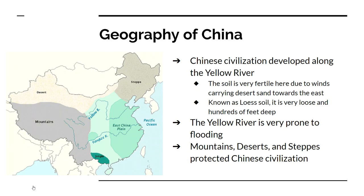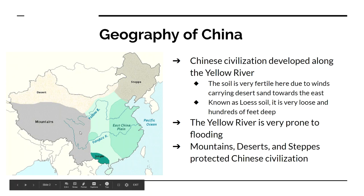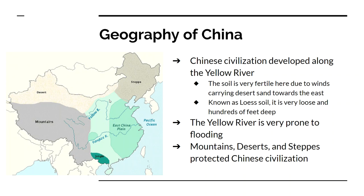Ancient China — we're going to talk first about geography. We've got a picture of what China looks like, and Chinese civilization is going to develop along the Yellow River, really in this area that I'm circling with the mouse. That's where Chinese civilization starts and it's going to spread from there, and the reason it starts there is because of the ground. The soil there is extremely fertile.